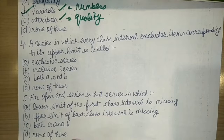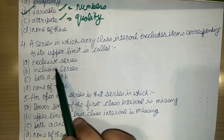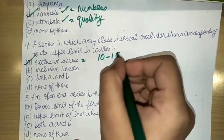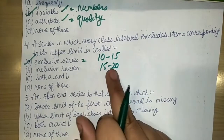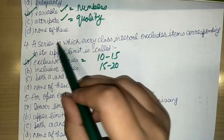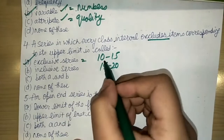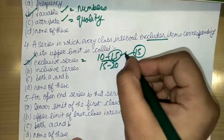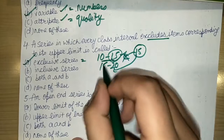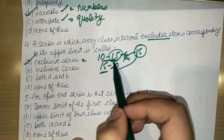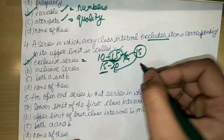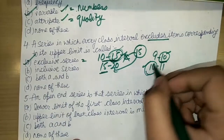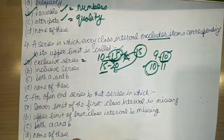The next question is: a series in which every class interval excludes items corresponding to its upper limit is called what? This is the exclusive series. In an exclusive series, the class intervals are like 10–15, 15–20, where the upper limit equals the next lower limit. If a value is 15, it is excluded from the 10–15 class and added to the next class 15–20. So the upper limit is excluded — hence it is called exclusive series.